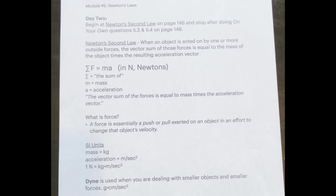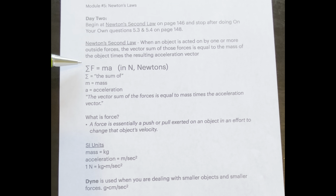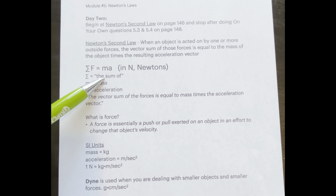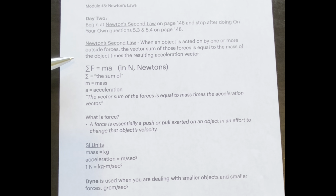Newton's Second Law is more often expressed with an equation rather than with words: Sigma F equals MA. If you understand these symbols, you can see how the equation is equivalent to the definition given above. This symbol is the capital Greek letter Sigma, which means 'sum of.' Thus, Sigma F means the sum of the forces. The M represents the mass of the object and A stands for the resulting acceleration. Since both F and A are vectors, we can more appropriately state this as: the vector sum of the forces is equal to the mass times the acceleration vector, which is identical to the above definition.